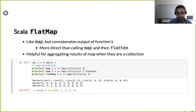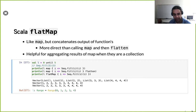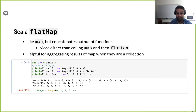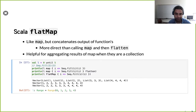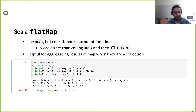FlatMap is a pretty powerful thing. For some people it's their go-to favorite, because you can use it in different ways. I mentioned how it can mimic filter, it can do map, it can do flatten. There's another thing called collect which we'll probably cover next week, and you can also mimic collect. So it's really pretty versatile.